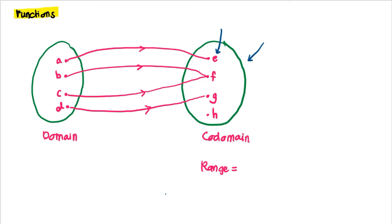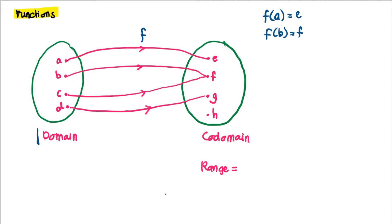A function maps objects to images. Suppose we call this function f. We can write that f maps object a to e, and f maps object b to f. This illustrates what we call a function.